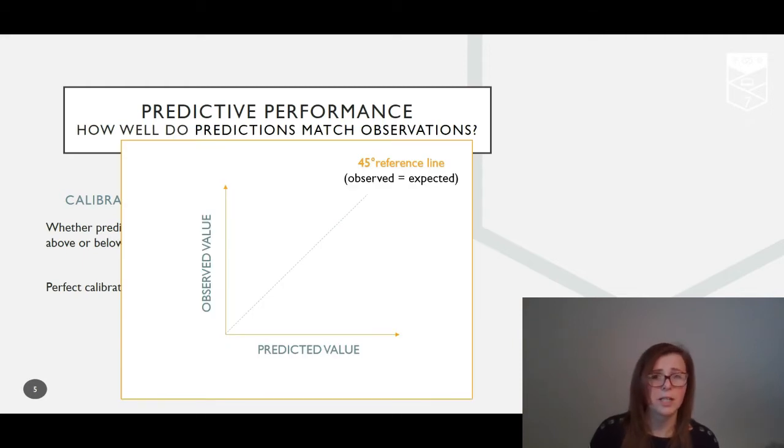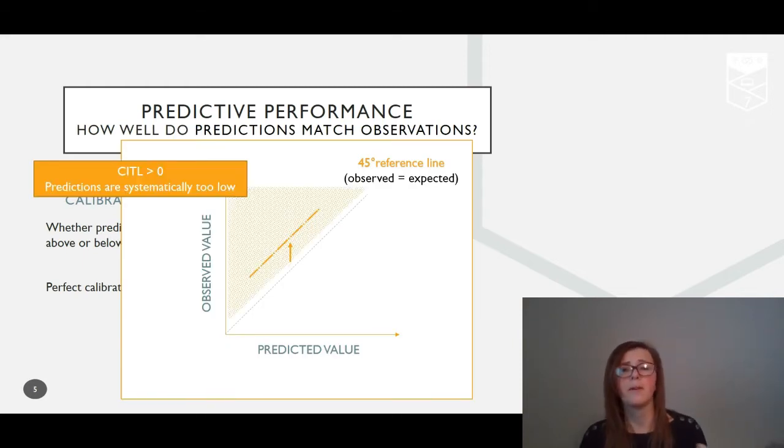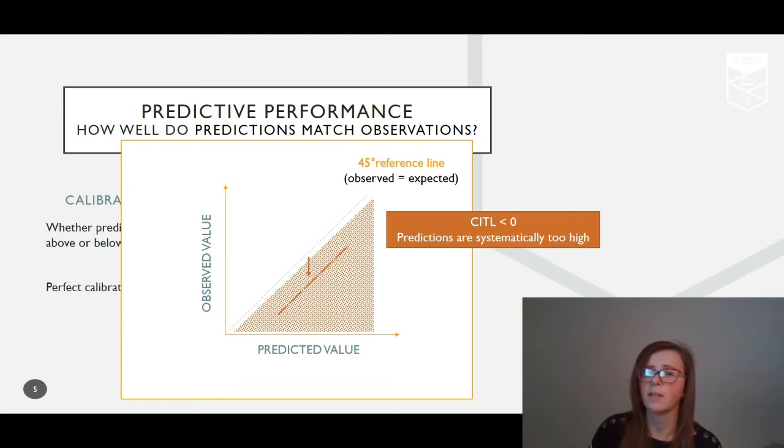On a standard calibration plot, the majority of individuals lying above the diagonal implies observed values are greater than predicted, so we're generally predicting values that are too low. Correspondingly, where the majority of individuals lie below the diagonal, predicted values are larger than observed and so our predictions are too high.